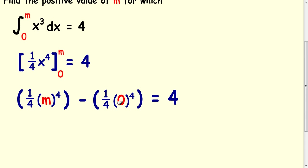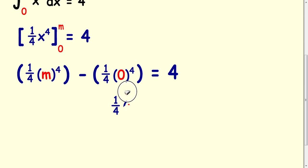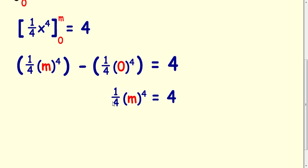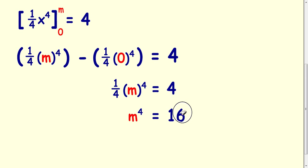Now all of this bit here comes to 0. So really ¼m⁴ is equal to 4. To get rid of the quarter here, times both sides by 4, so you're going to get m⁴ equals 16.